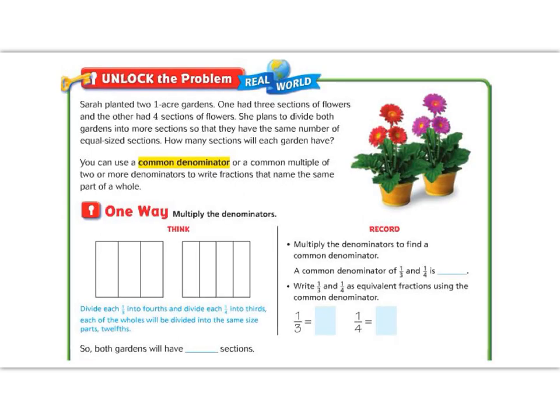All right 5th graders, ready to jump in with the unlock the problem. Today we're talking about common denominators, which is a very important concept when talking about fractions. A denominator is the bottom part of a fraction, and the top part is called a numerator. Common means they have the same thing — we need common denominators any time we are going to add or subtract fractions.